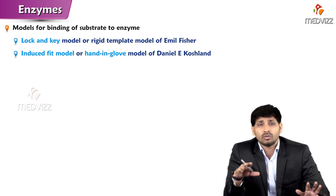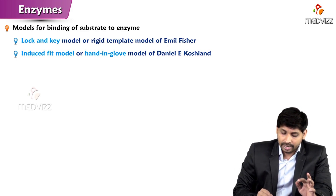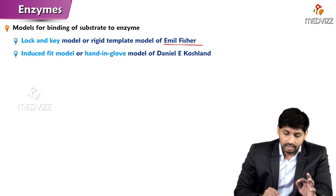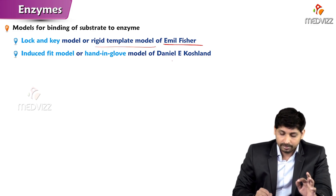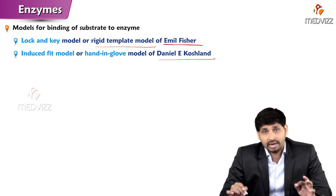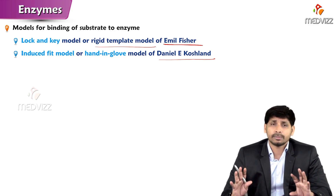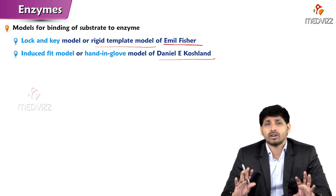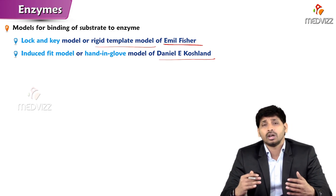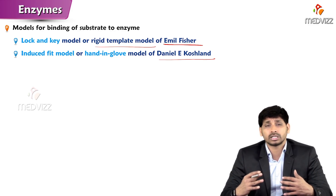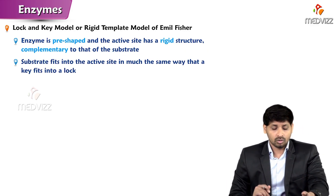This mechanism of enzyme action is famously explained by two theories: one is the lock and key model and the other is the induced fit model. The lock and key model was explained by Emil Fischer and is a rigid template model. The induced fit model was explained by scientist Daniel Koshland. According to him, when a substrate binds to the enzyme, it causes conformational changes in the enzyme structure, making the substrate more compatible to bind.